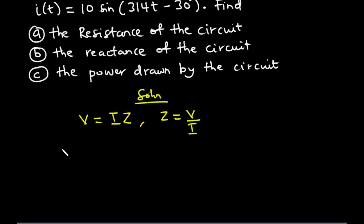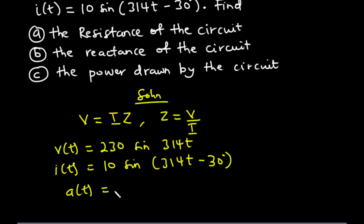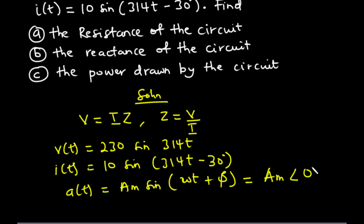From the question, the instantaneous voltage is equal to 230 sin 314T, and the instantaneous current is 10 sin 314T minus 30 degrees. The instantaneous voltage or current is given by the expression A of T equals AM sine omega T plus phi. To convert this to polar form, you have AM at the phase angle.